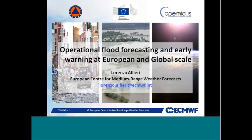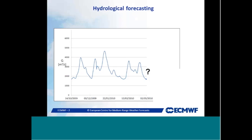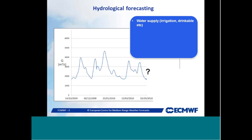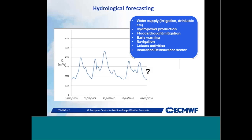As hydrologists, we have historically been interested in what happens in river networks at several river stages by collecting measurements, and we always wanted to know what comes next — the future values. This is useful for water supply, power production, flood and drought mitigation, early warning, river navigation, leisure activities, insurance and re-insurance, climate change studies, and so on.